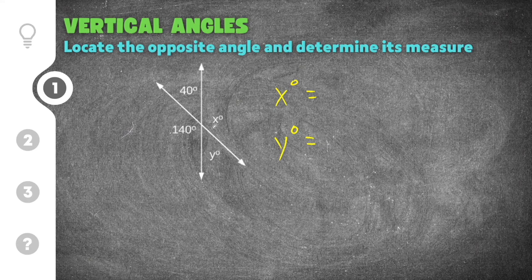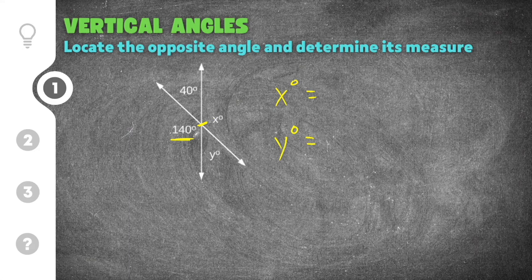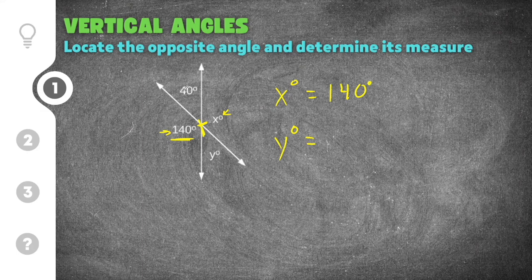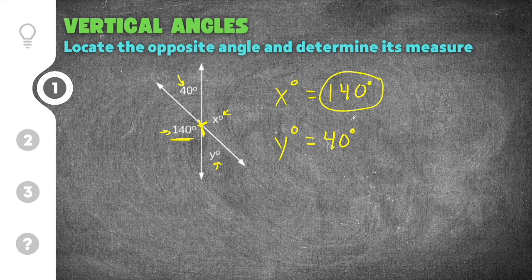Looking at the diagram we have 40 degrees and 140 degrees. The vertical angles are diagonally across the point of intersection, so the angle across from 140 is angle x — they are vertical angles. Since vertical angles are congruent, x is also 140 degrees. That leaves angle y diagonally across from 40 degrees, making them vertical, so y is also 40 degrees. The solution is x equals 140 degrees and y equals 40 degrees.